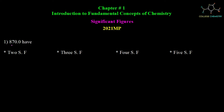Question number 1: 870.0 has how many significant figures? The options are: 2 significant figures, 3 significant figures, 4 significant figures, or 5 significant figures.